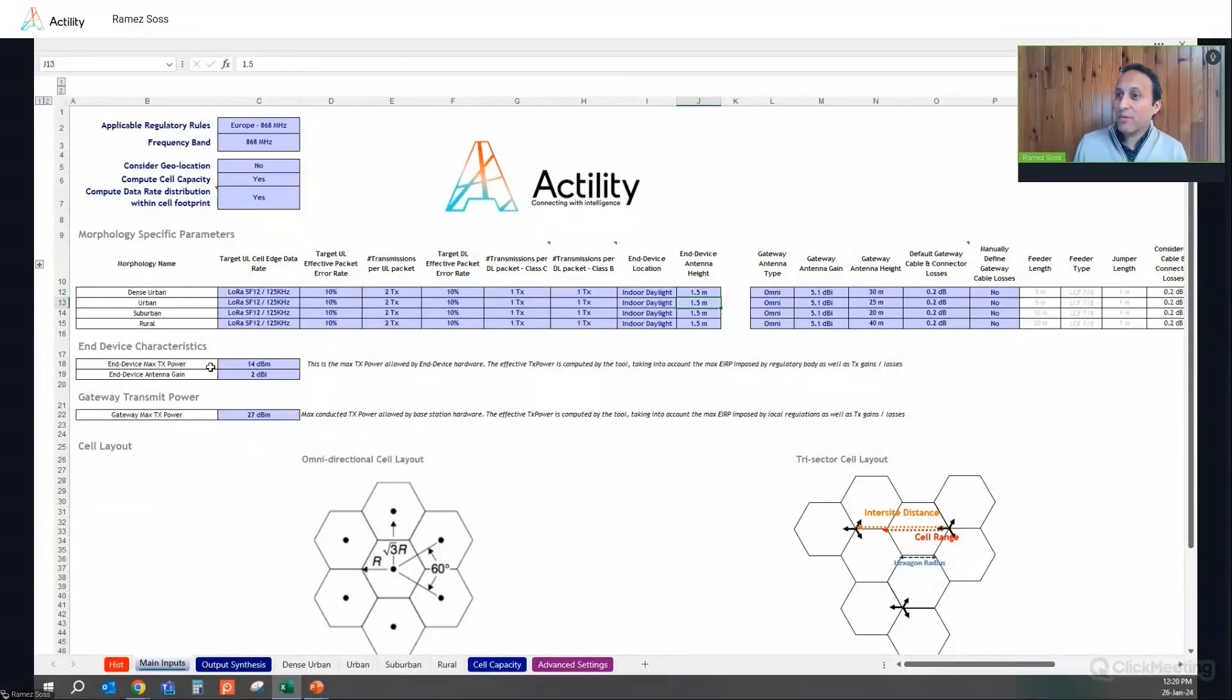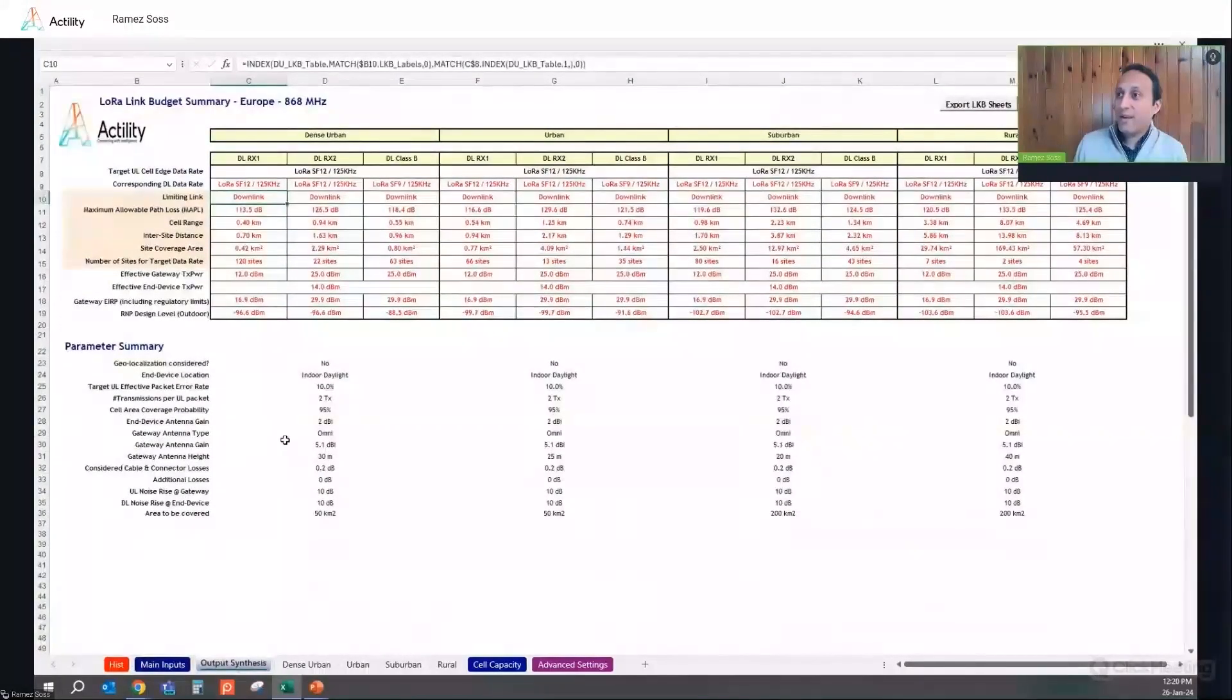And among your other inputs, you can also set all the end device characteristics in terms of transmission power and antenna gain, and the same thing on the gateway side. And then in the other sheet, you have the output synthesis, where for each morphology, we have potentially three different link budgets, depending on the receiver slots that you intend to use for downlink for your design. So let's assume that you do that for the downlink RX2. So you have an uplink link budget and the downlink link budget based on RX2. And then the tool estimates the link budget in each direction, and tells you what is the limiting link, and provides you with the analysis about the maximum allowable path loss, the cell range, the inter-site distance, the site coverage area, and finally, the number of sites required to cover a target area, depending on the area to be covered for each morphology.